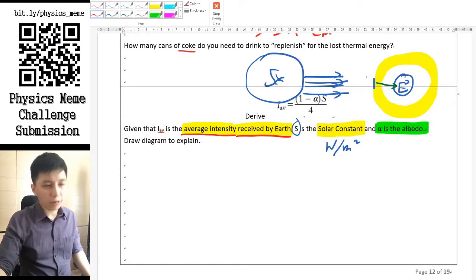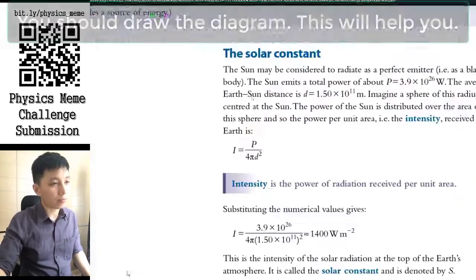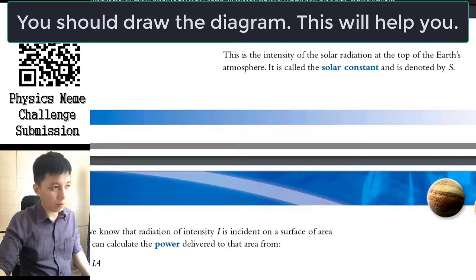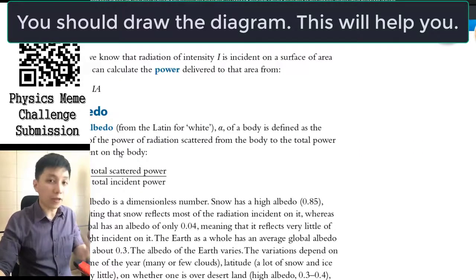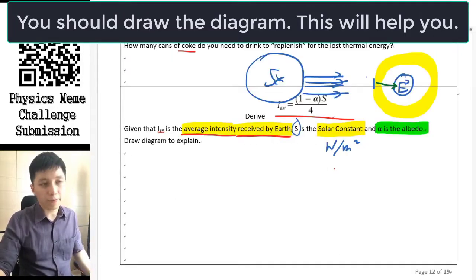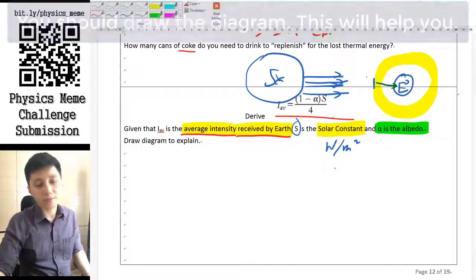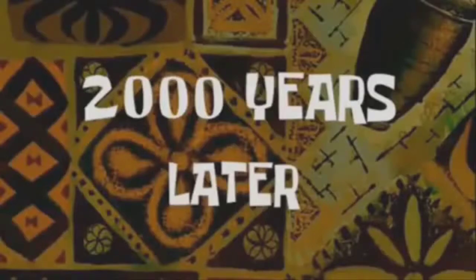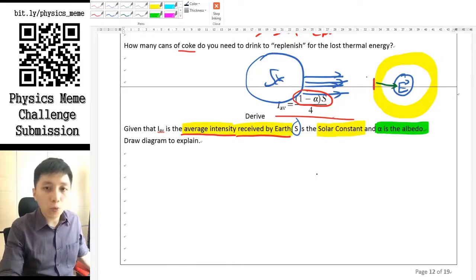That should be all you need to know for deriving this equation. If you need more hints, you can read the textbook on pages 332 and 333. For more excitement, try to derive the equation yourself — pause the video now, try it out, and I'll show you how to do it shortly.